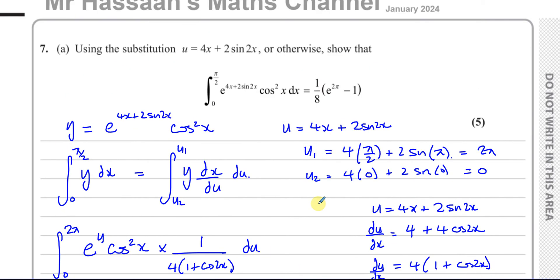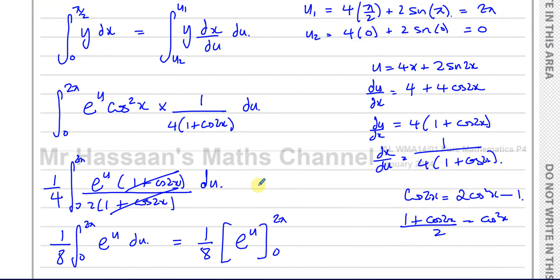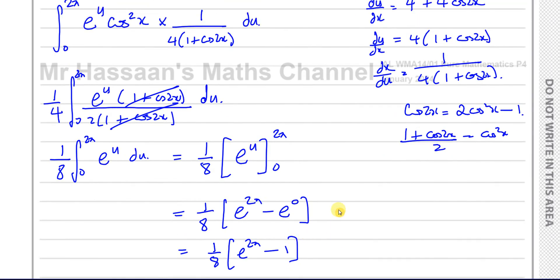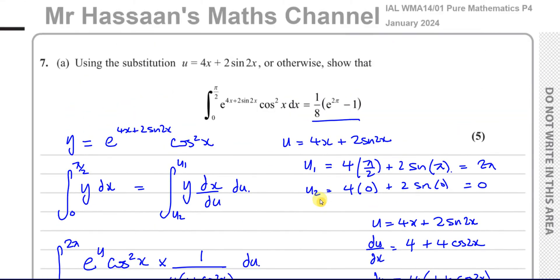Is that what we had to show? Yes it is. Using the double angle formula for cosine caused these to cancel out and you have your nice easy integral. The integral of this is equal to 1 over 8 e to the power of 2 pi minus 1.